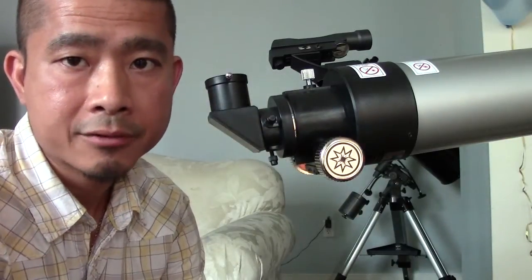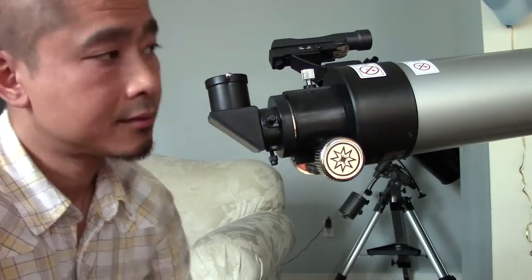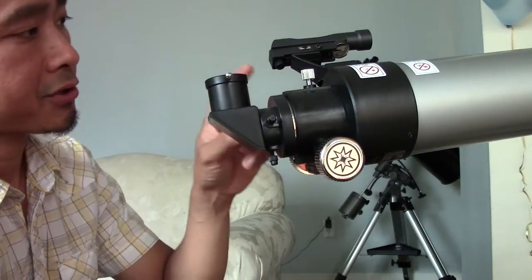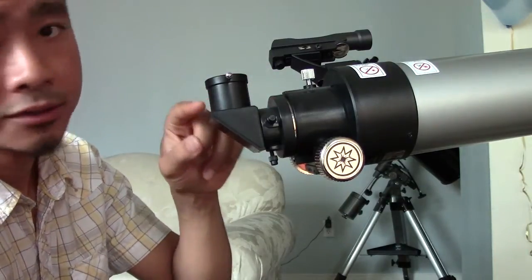If you want to use the telescope manually, which is a lot more fun for me anyway, you can also do that. So what you need to do is make sure that your finder, this is the finder scope, is aligned with your telescope.